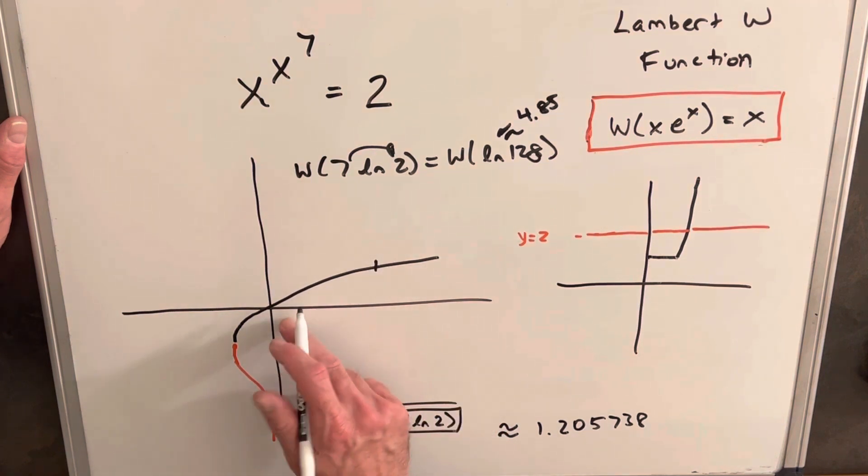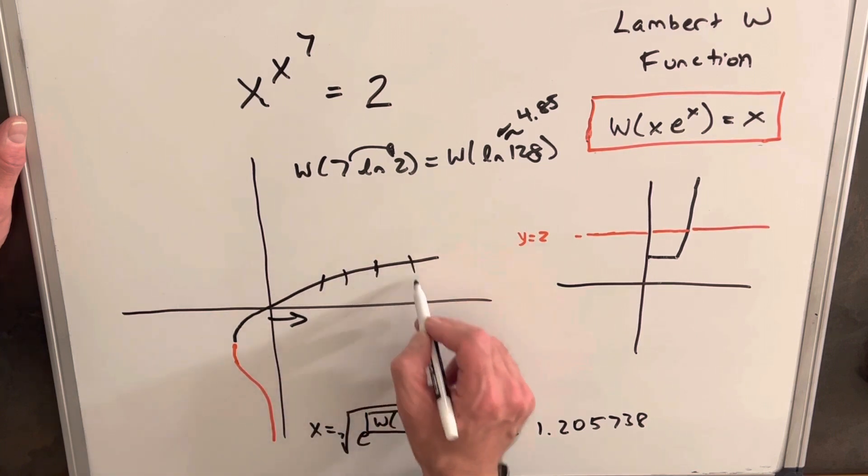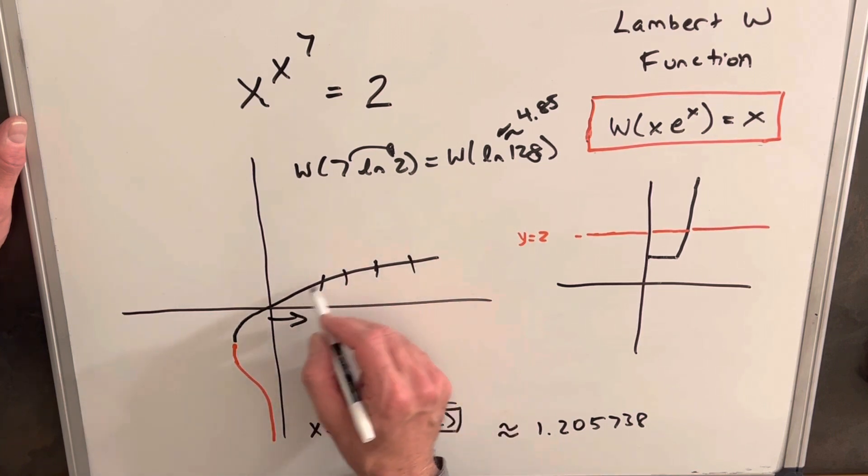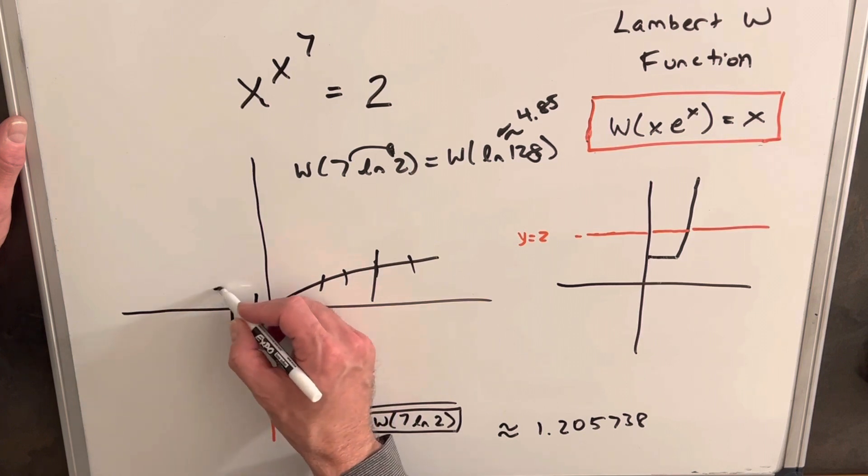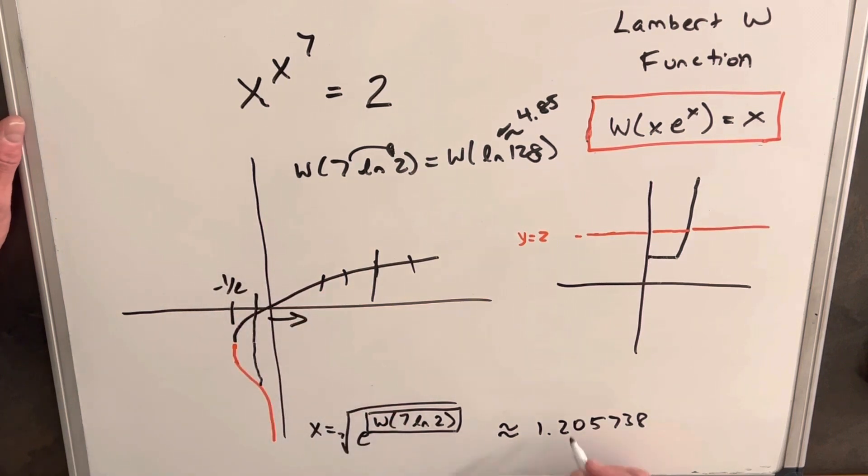So we see on the Lambert W function, everything to the right of 0, all these points here have just one real solution because there's just one intersection point here. If we were in the negative area here, we end up with two real solutions. This here goes to negative 1 over e. So we're going to have just the one real solution for this problem.